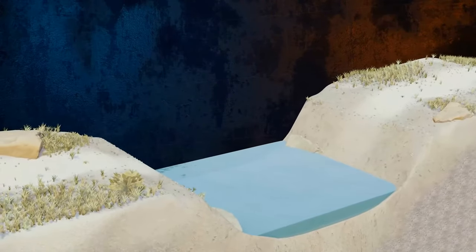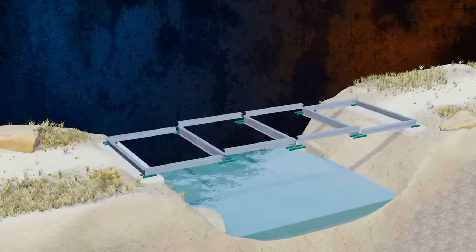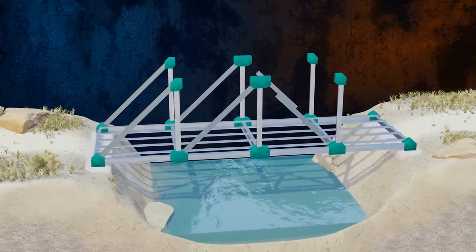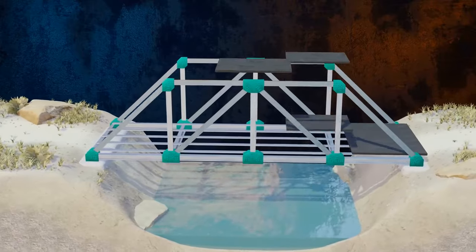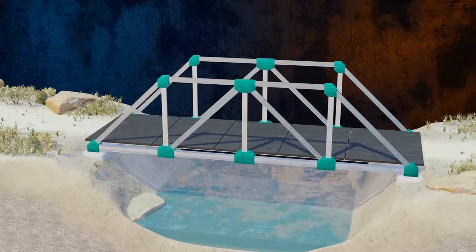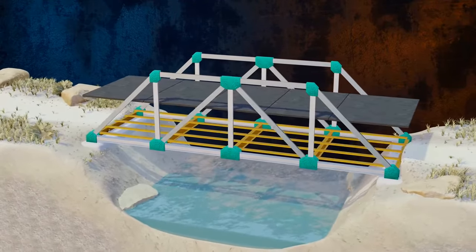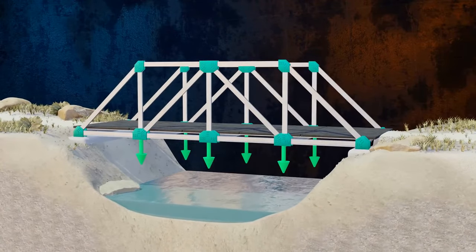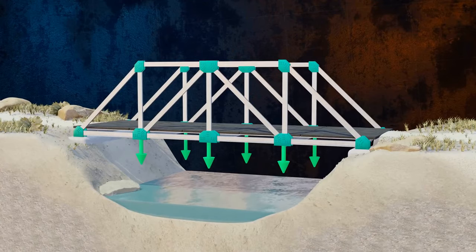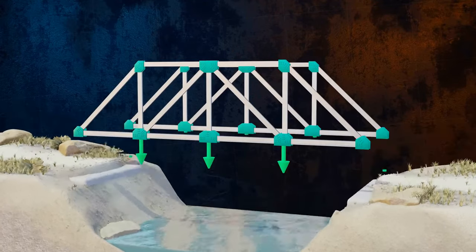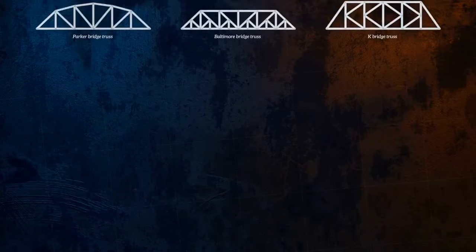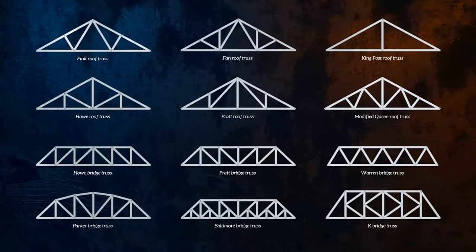Even seemingly three-dimensional structures can often be analyzed as planar trusses. Take a look at this bridge for example. The loads are transmitted from the horizontal floor beams to the two vertical trusses on each side of the bridge. Each of these trusses only carries loads acting in its plane, and so we can analyze it as a two-dimensional structure.